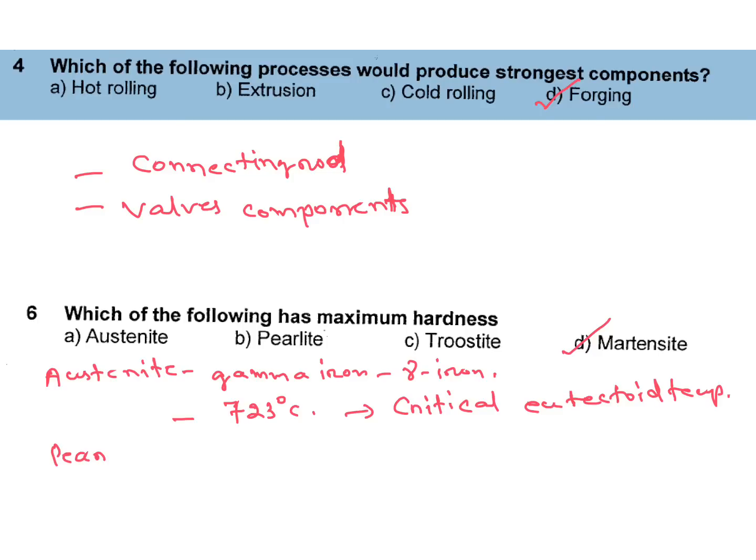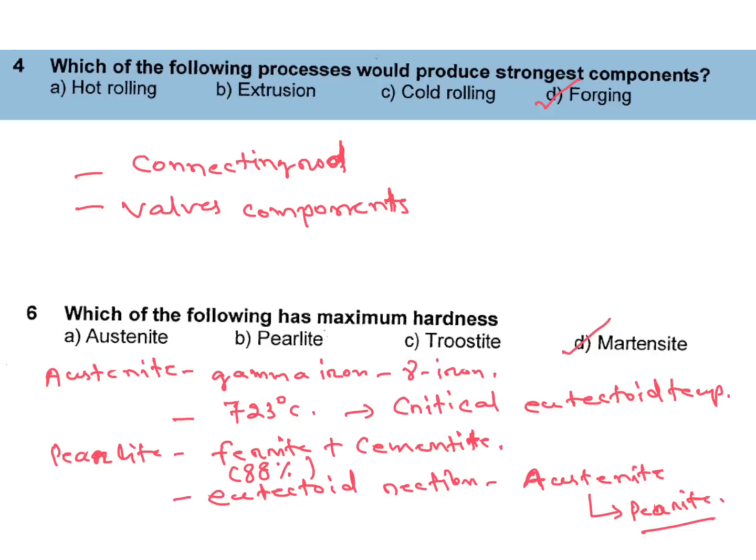Then pearlite. Pearlite is alternate lamina of ferrite plus cementite. In our eutectoid reaction, if we cool austenite, then we will get alternate lamina of ferrite cementite, it is called as pearlite. Here one important thing is in pearlite, ferrite is 88% weight percentage and cementite 12%. This is very important for IES and ISRO. Sometimes GATE may ask this question.